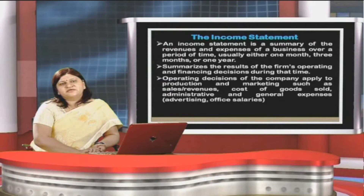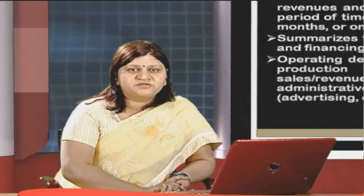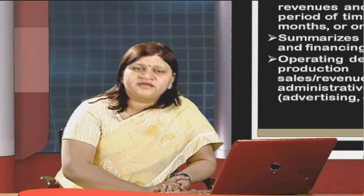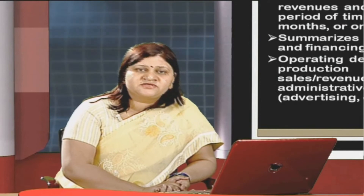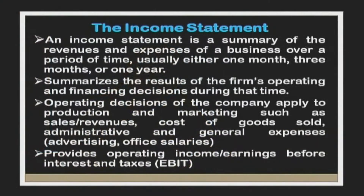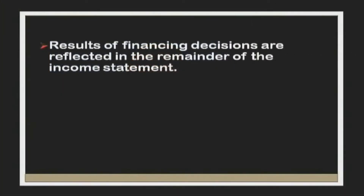To ascertain gross margin, we evaluate sales and cost of goods sold. Out of that margin we subtract operating expenses to get net profit. We then add other incomes and subtract the interest element and taxation to earn profits after tax. The income statement provides operating income — earnings before interest and tax (EBIT) — which can further be reduced to get the profit after tax figure.